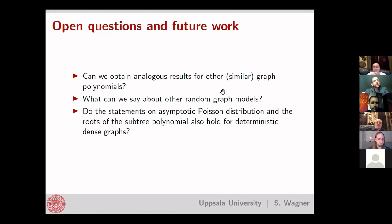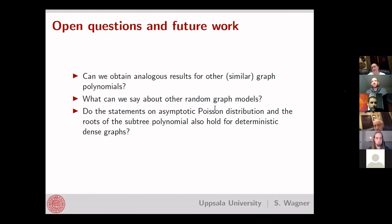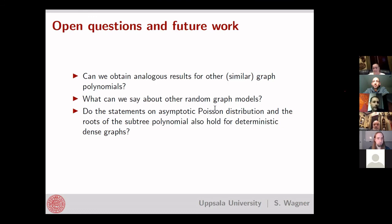Question: For the result about random graphs having high probability of being spanning — is it enough to know that all induced subgraphs have similar density, rather than full randomness? Response: It's likely one can weaken the conditions further. The key is making the double counting argument work, and it's not crucial that it holds for every single vertex — one can allow occasional failures. The exact optimal condition is unclear, but probably something like the density of every induced subgraph being bounded away from zero would suffice.